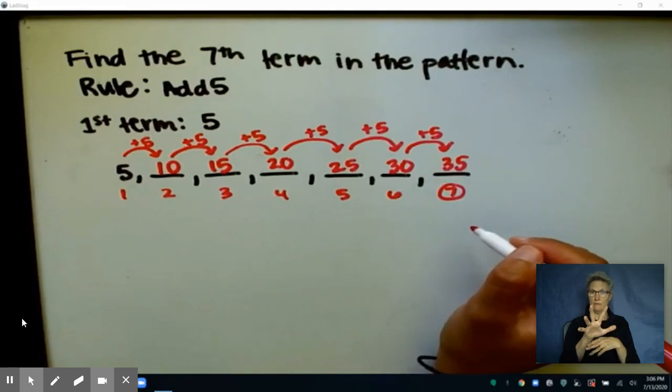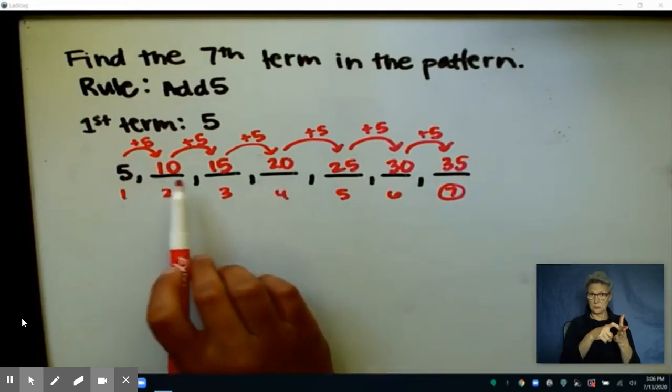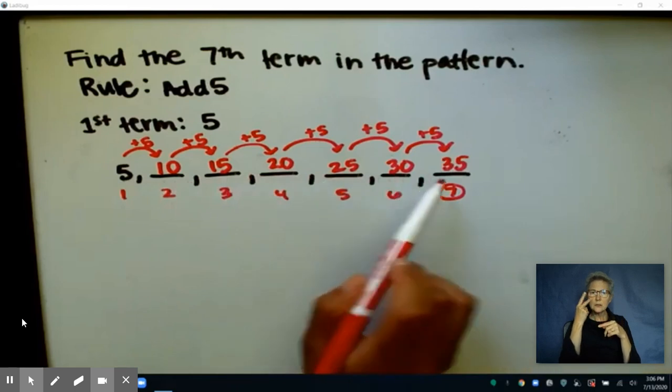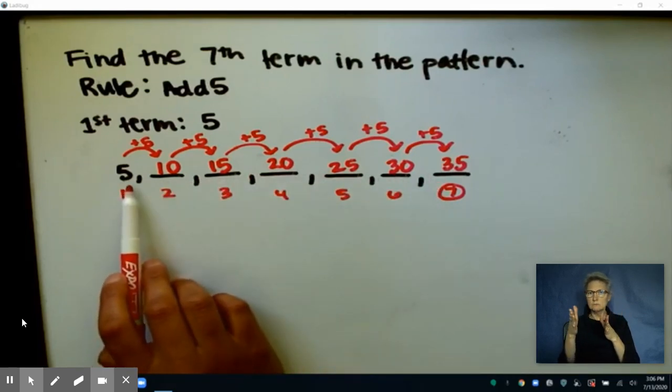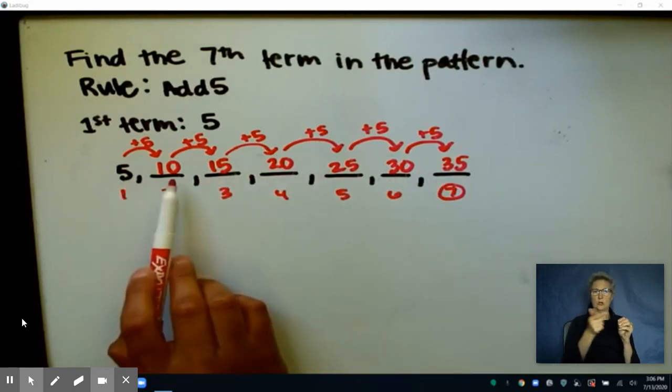I'm also noticing that as I look at my pattern that's developing here, my numbers are alternating between odd and even numbers.